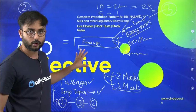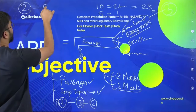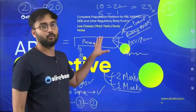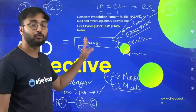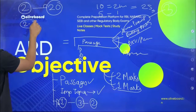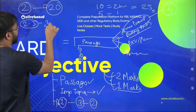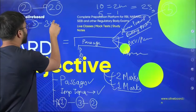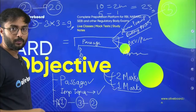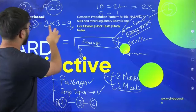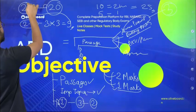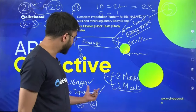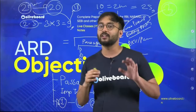Out of 20 two-marker marks, a maximum of two to four passages come in NABARD Phase 2 objective. Three passages means nine questions at two marks each — that is eighteen out of twenty marks are passage-based. There are certain important topics I will cover, which I will explain in the next five minutes.